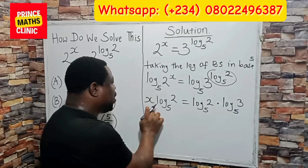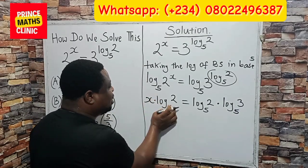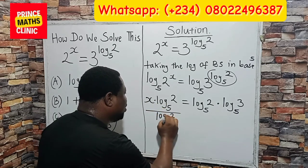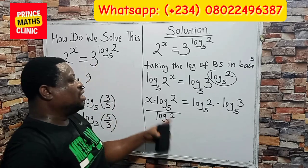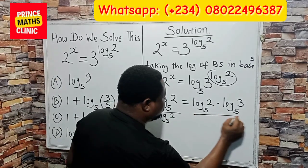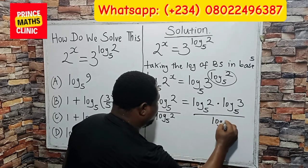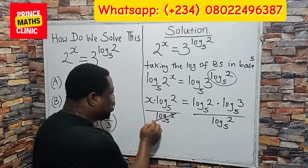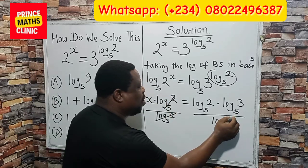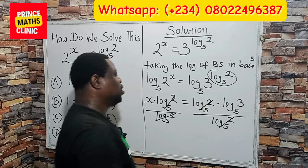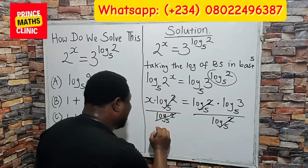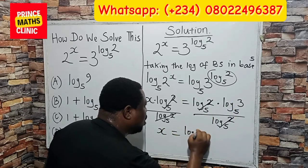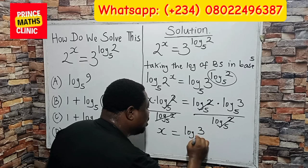What do I do next? I want to obtain the value for x. Since x is multiplying log 2 in base 5, I will divide both sides by log 2 in base 5. What you do to the right, you must do to the left. Log of 2 in base 5 cancels log of 2 in base 5 on both sides, so I am left with x equals log of 3 in base 5.